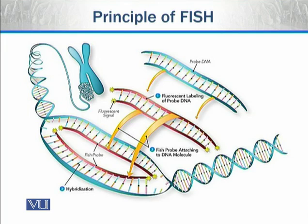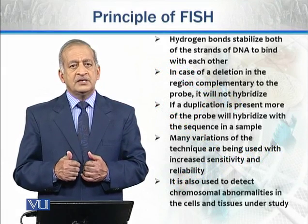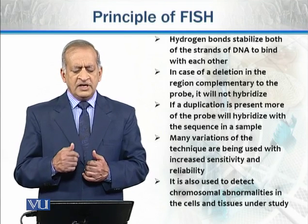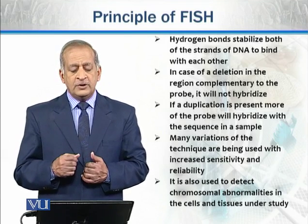It is important to mention that the probe will attach with only that particular sequence, so only that particular sequence of the chromosome will be visible while other parts will not be visible. Hydrogen bonds stabilize both strands of DNA to bind with each other. In the case of a deletion in the region complementary to the probe, it will not hybridize.